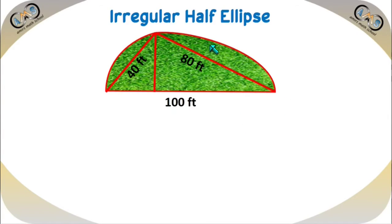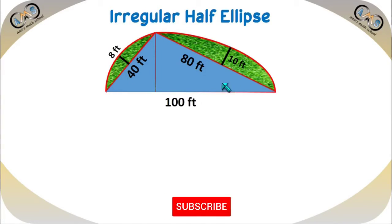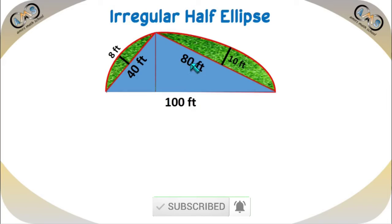For this half ellipse, find the highest perpendicular length — suppose this one is 10 feet. And for the other half ellipse, suppose this one is 8 feet. We have one triangle with sides 40, 80, and 100, and two half ellipses. In Part 1, we discussed finding the triangular type area length. Using that formula, we can easily find the area of the triangular portion. To find it, first find the value of s, which is the sum of the three sides divided by 2: (100 + 80 + 40) / 2 = 110.